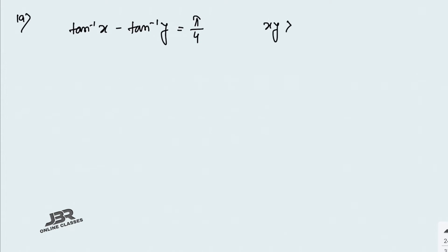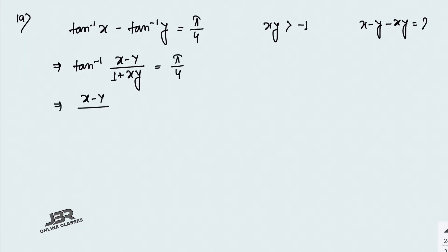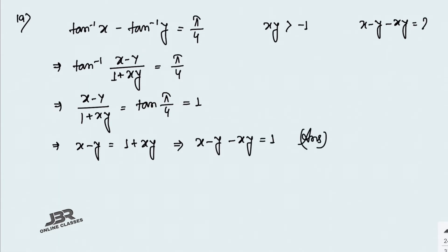Sum number 19: if tan⁻¹(x) − tan⁻¹(y) = π/4, and xy > −1, find the value of x − y − xy. Using the formula tan⁻¹(x) − tan⁻¹(y) = tan⁻¹((x−y)/(1+xy)) = π/4, we get (x−y)/(1+xy) = tan(π/4) = 1. Therefore x − y = 1 + xy, which means x − y − xy = 1. That is your answer.